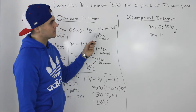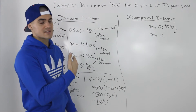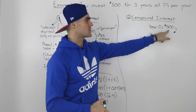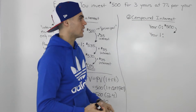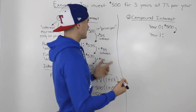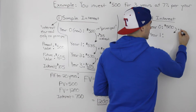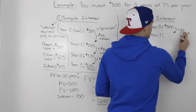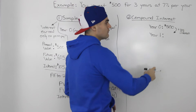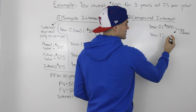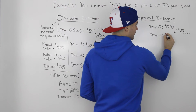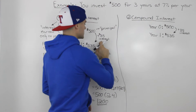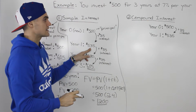Now let's say instead of simple interest, you invest that $500 for three years at 7% compounded interest. In year zero, you still start with $500. In the first year, you still make the same $35 interest, because it's based on the amount you invested: 500 times 0.07 equals 35. So at the end of the first year, you have $535 — the same as with simple interest.